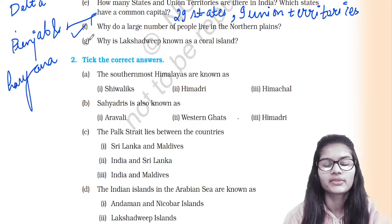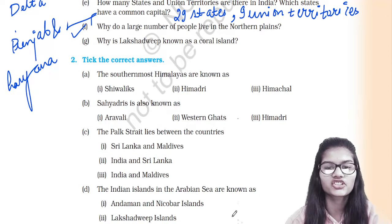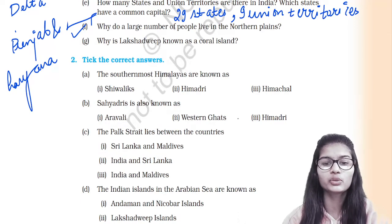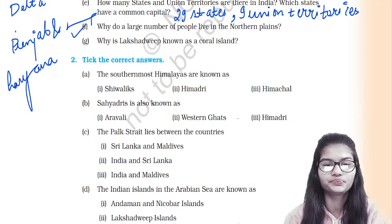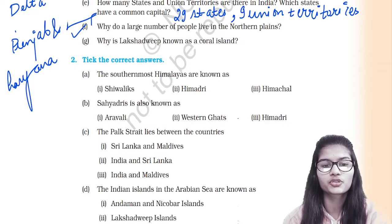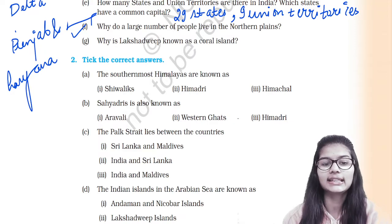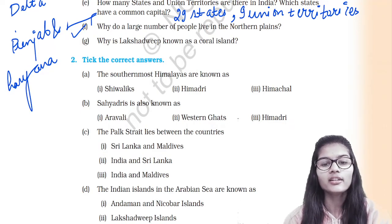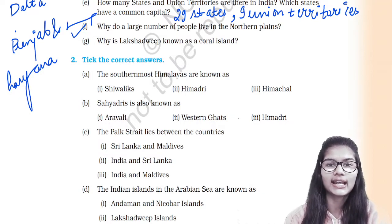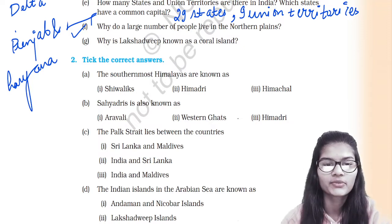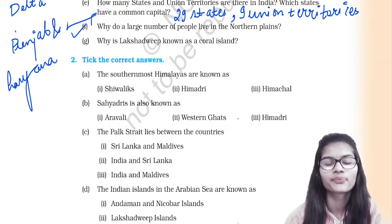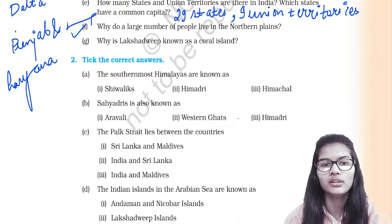Why is Lakshadweep known as a coral island? Because it is formed from corals. Corals are small marine animals called polyps — tiny marine animals that live in water. Corals are formed from the skeletons of polyps, and since Lakshadweep island is formed from corals, it is known as a coral island.